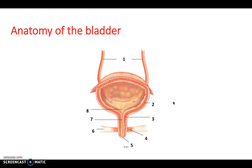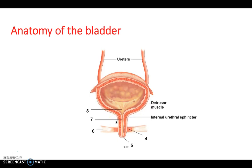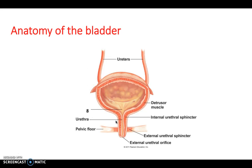Looking at the bladder: the ureters enter supralaterally. The trigone is the muscular region; the detrusor muscle contracts to cause excretion of urine. We have the internal urethral sphincter, which is involuntary, and the external urethral sphincter, over which we have conscious control. The pelvic floor contributes to continence and can be damaged in pregnancy, causing incontinence. The urethra exits from the neck of the bladder.